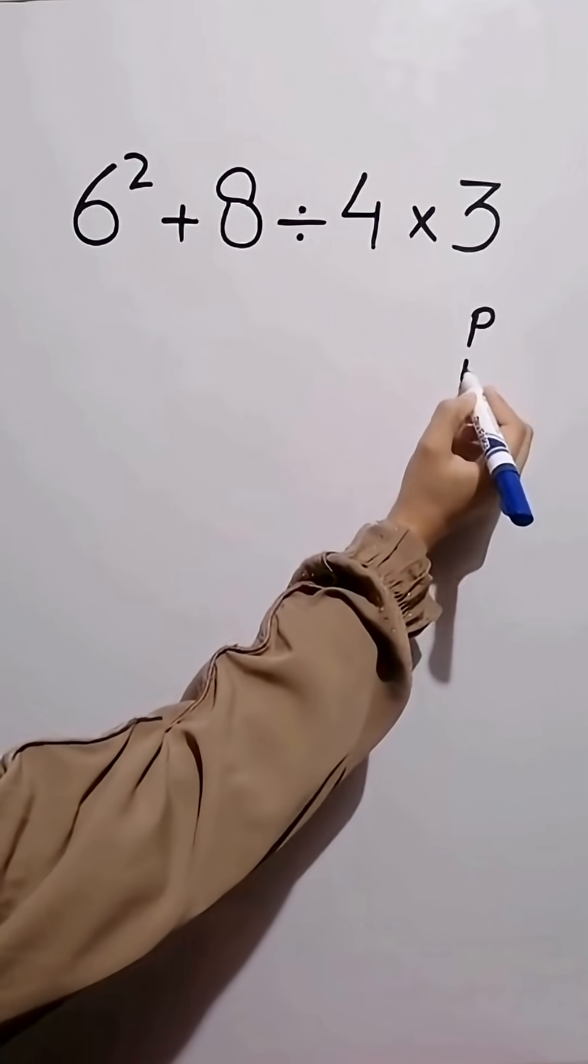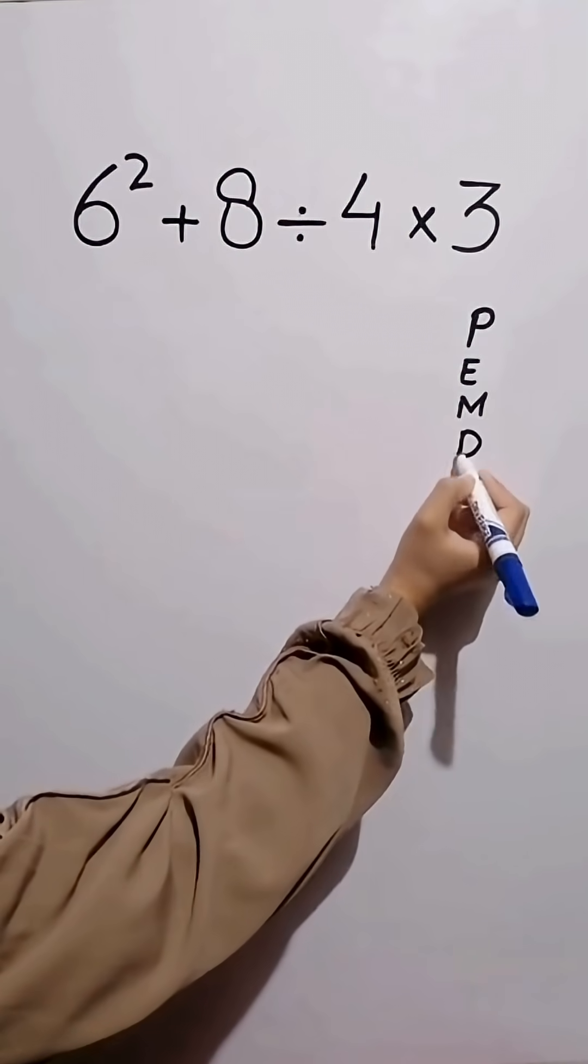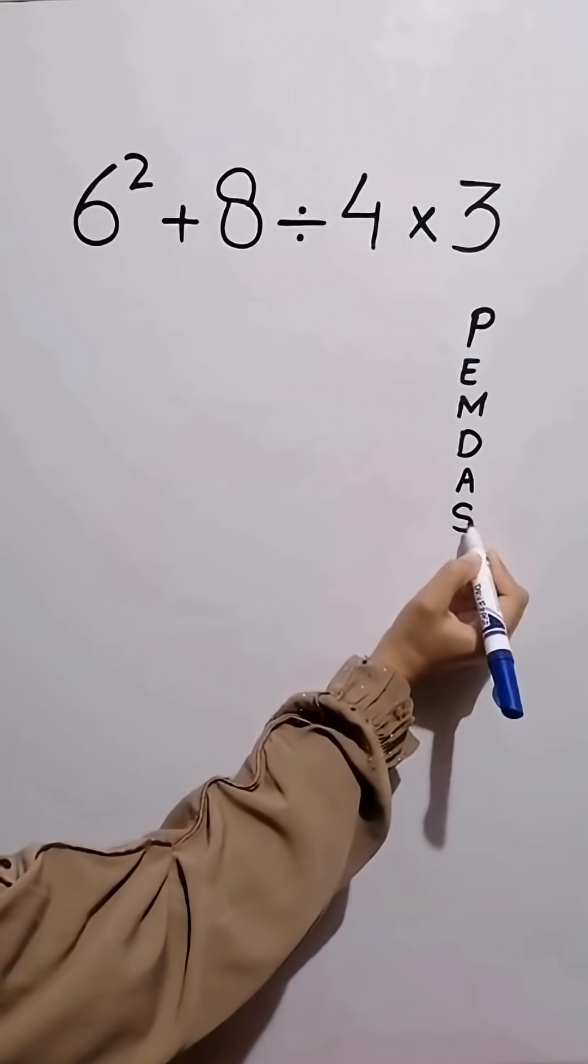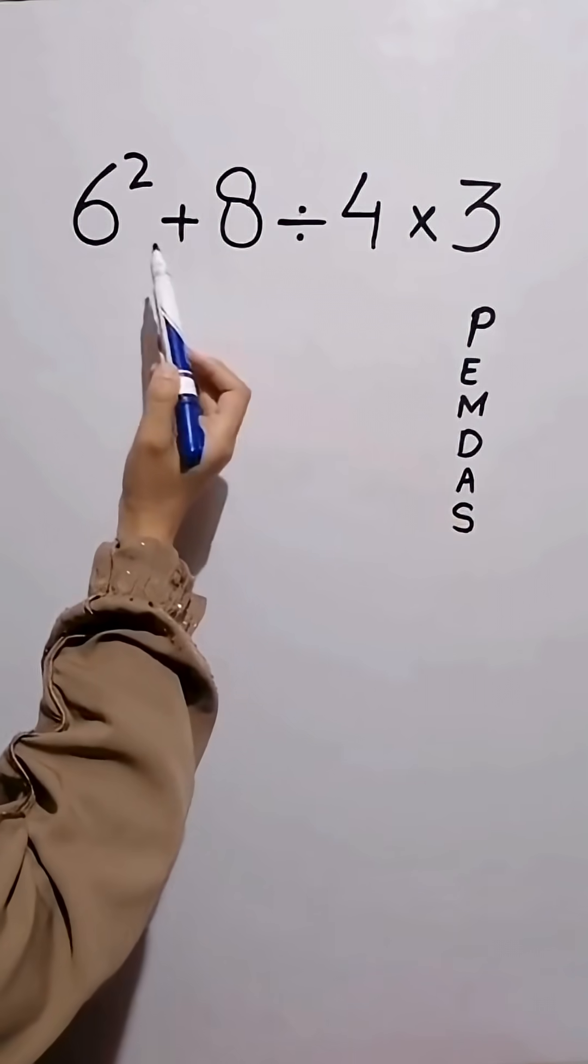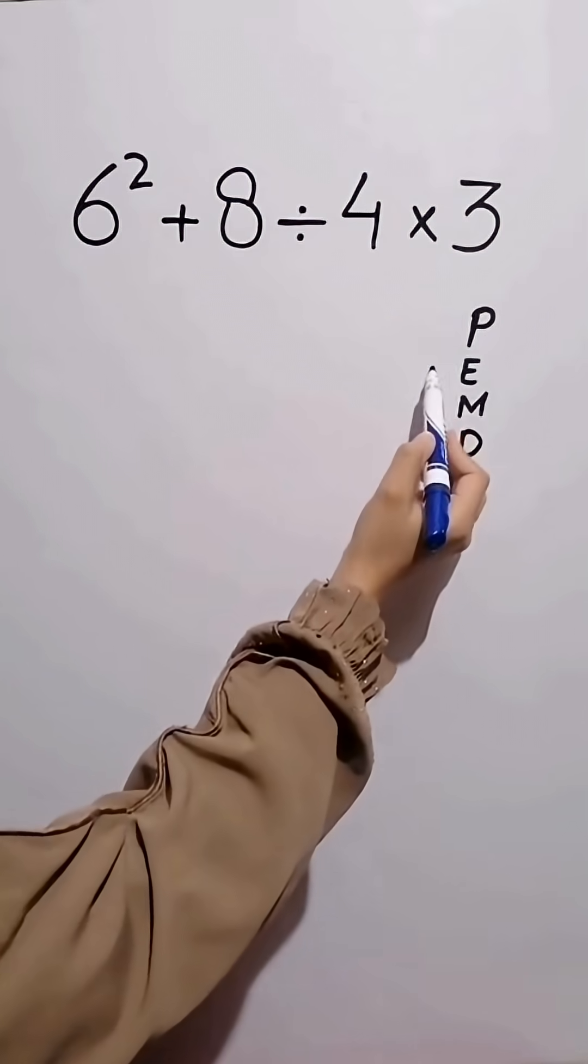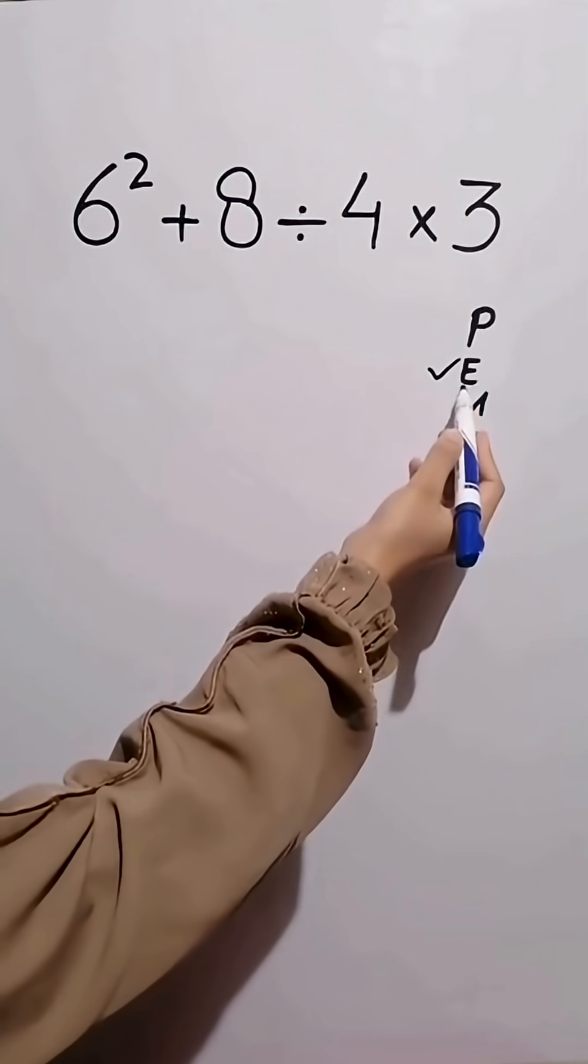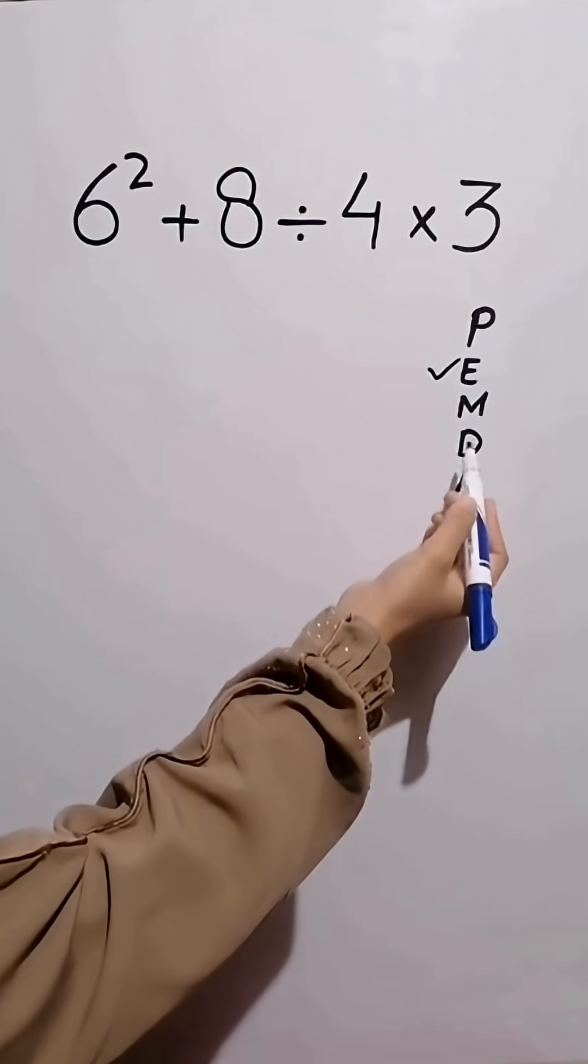To solve this question, we need to follow the order of operations which is PEMDAS. According to the PEMDAS rule, first we simplify this exponent. Because exponent comes before multiplication, division, and addition.